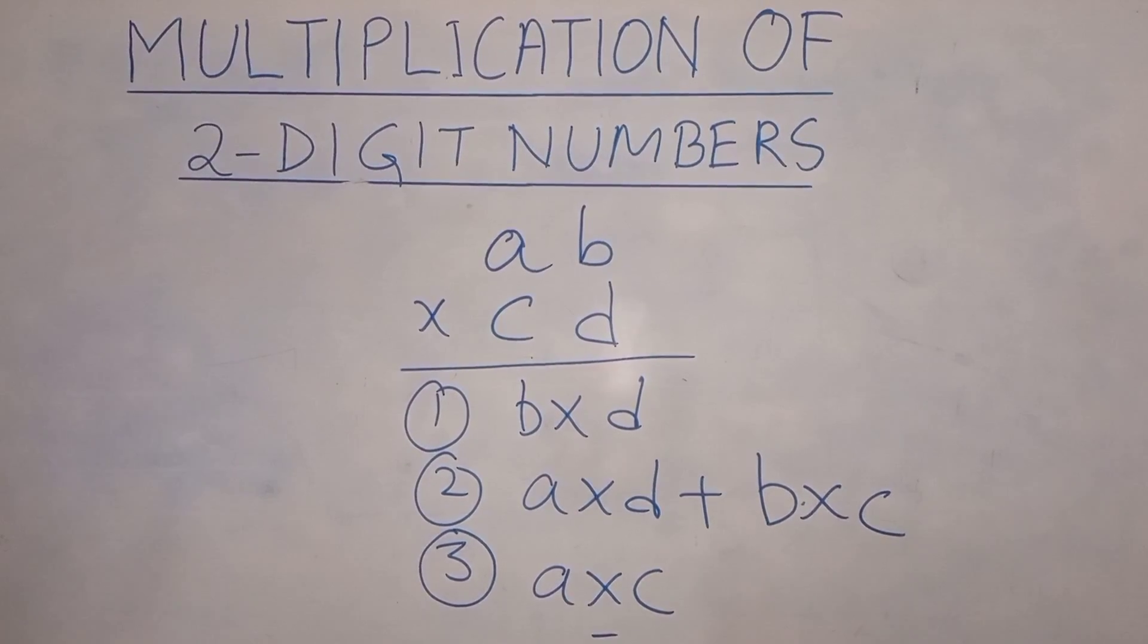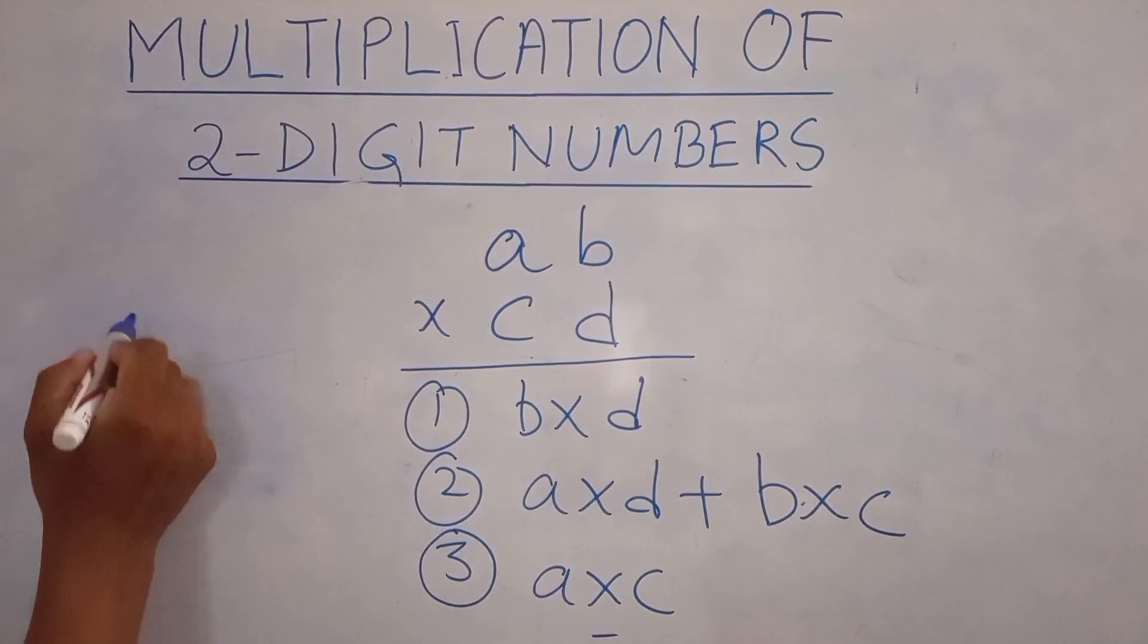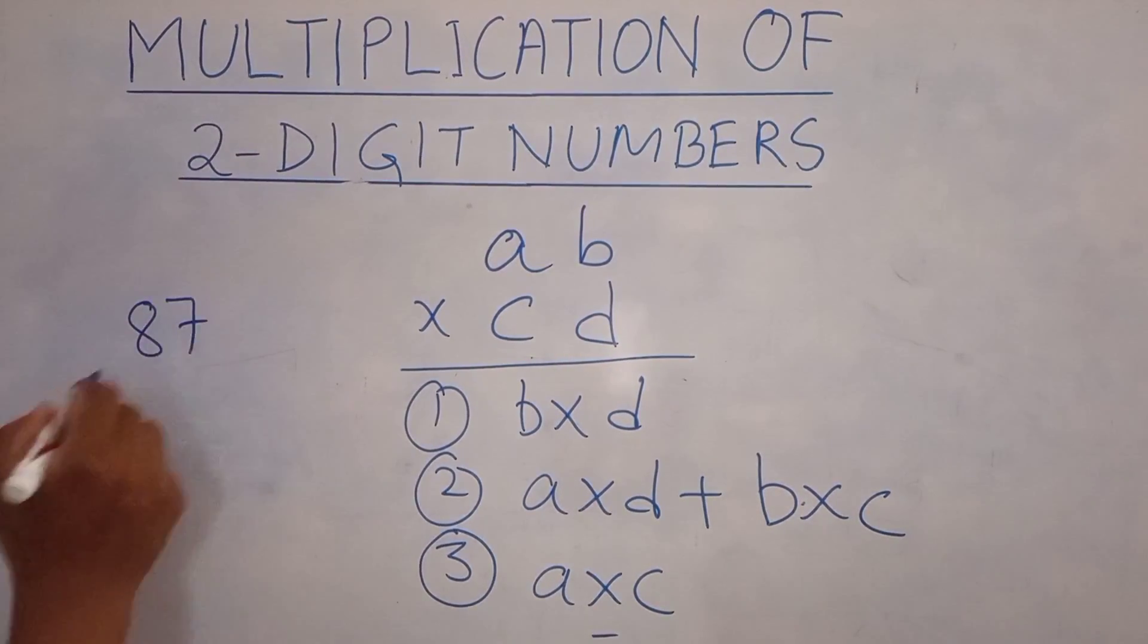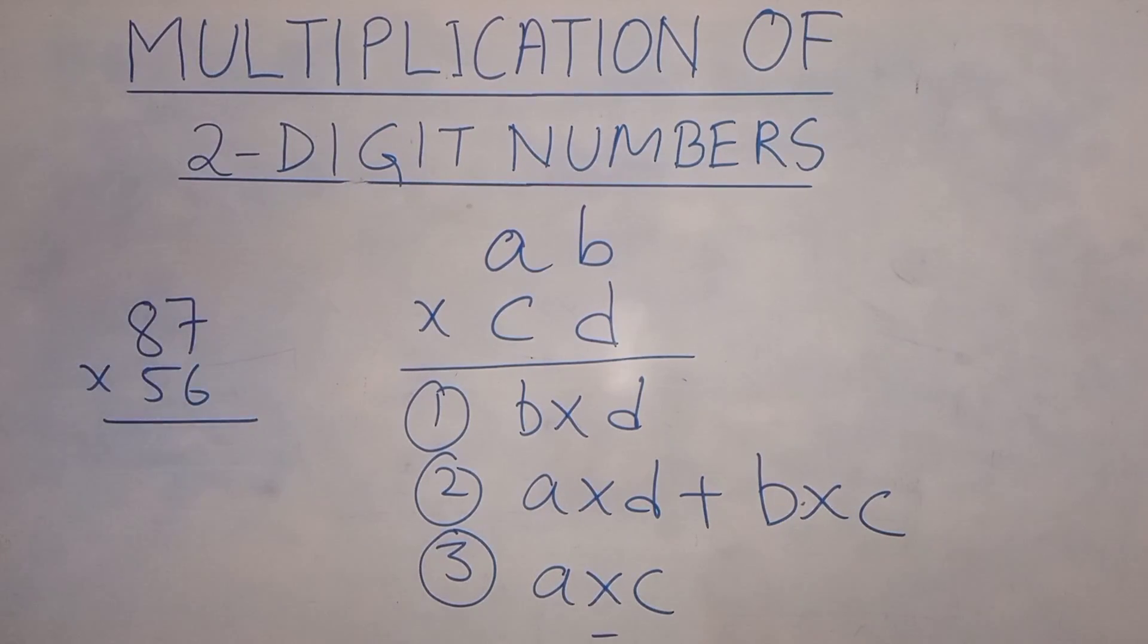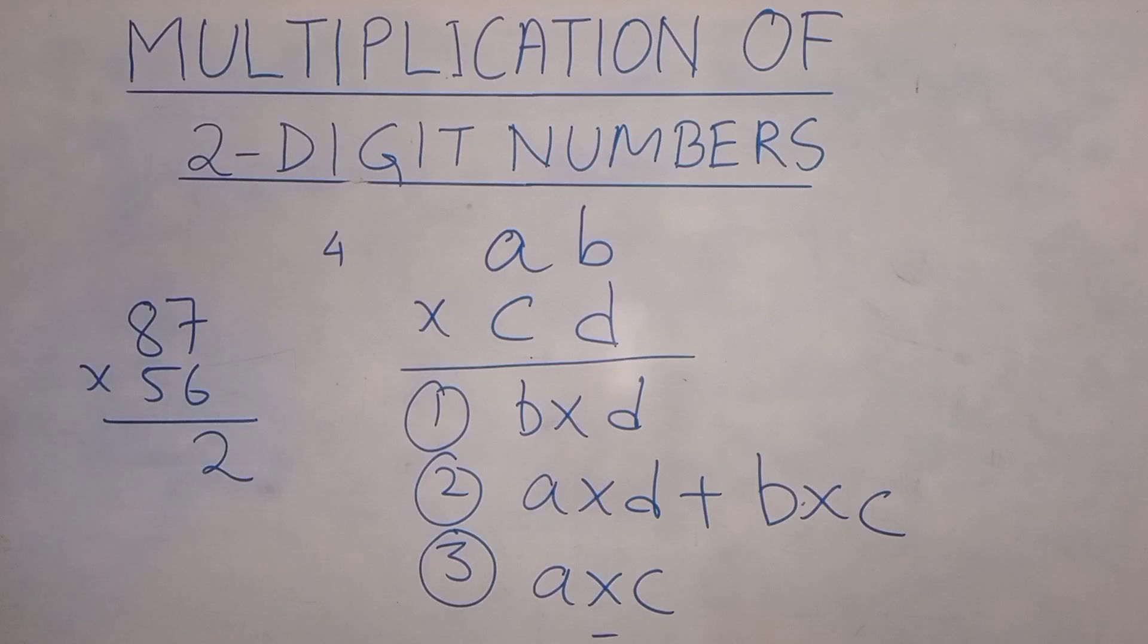So let's move on to our next example: 87 into 56. So 6 into 7 is 42. So here we need to be careful. We have to write only the 2 here and the 4 will write here.